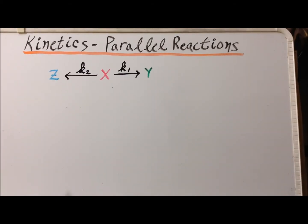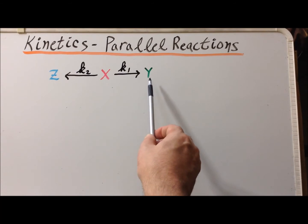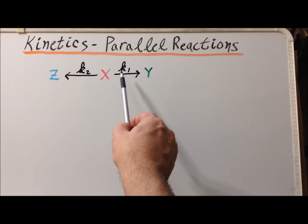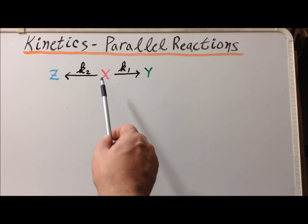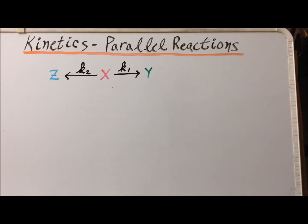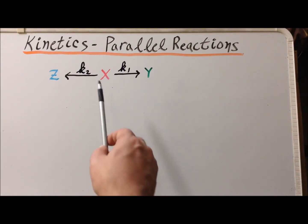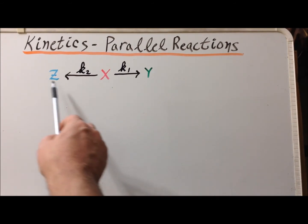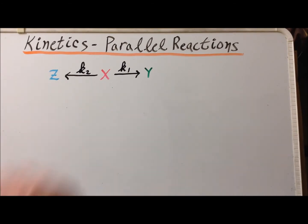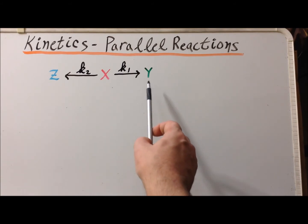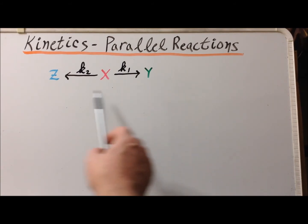Specifically, X is converted into Y with a first-order rate constant K1. Also, X can convert into Z with first-order rate constant K2. We're going to assume that the initial quantities of Y and Z are zero.